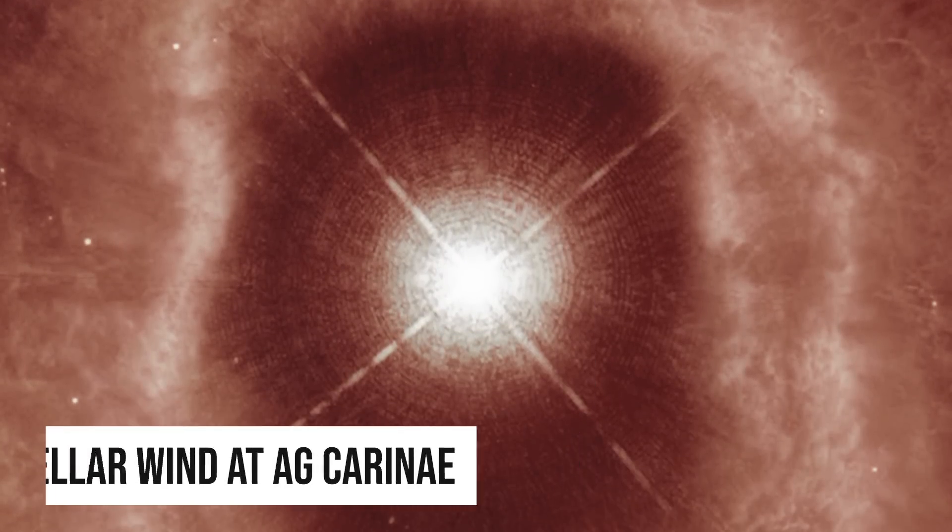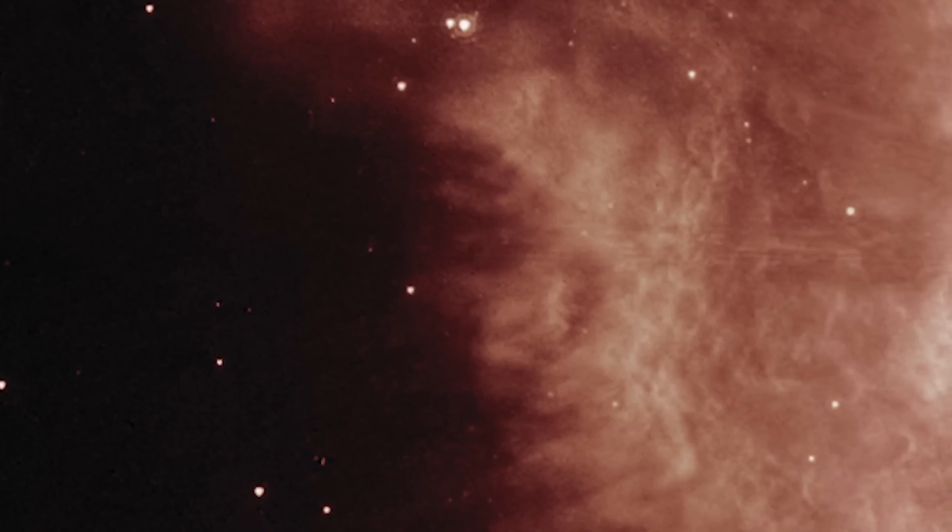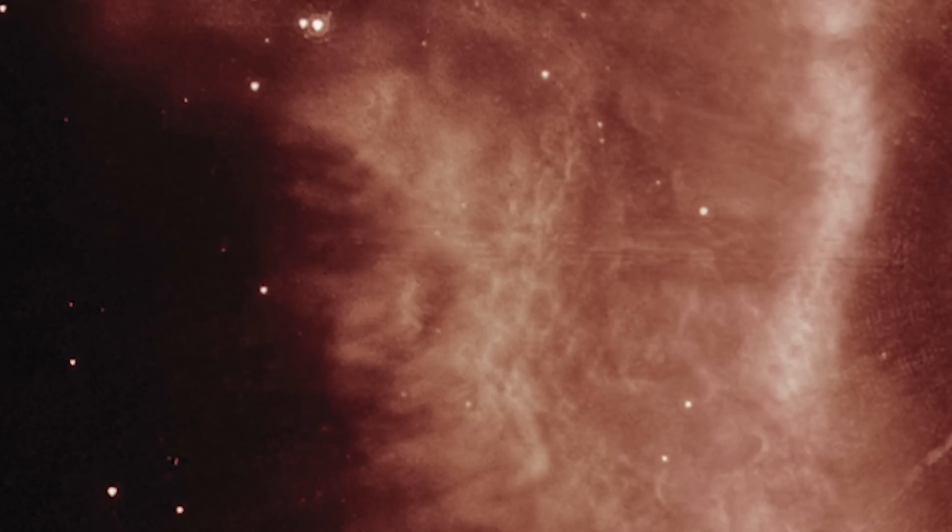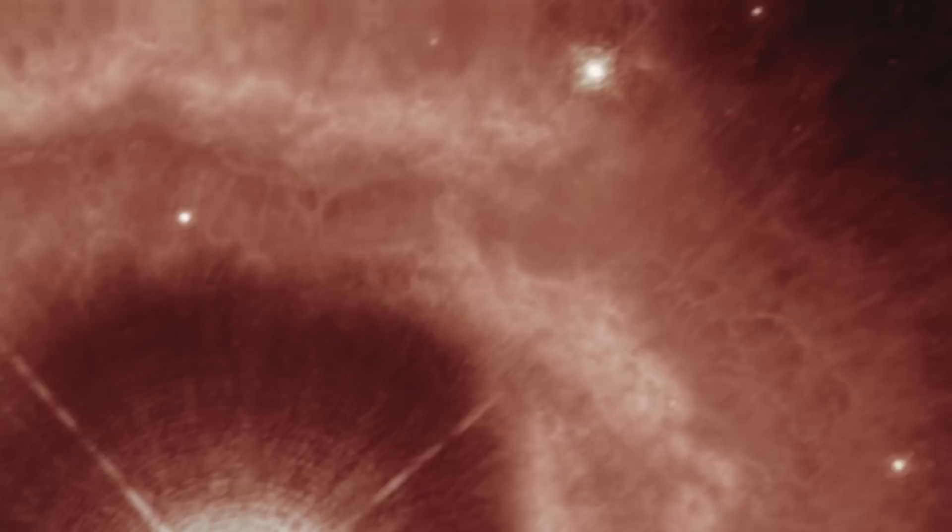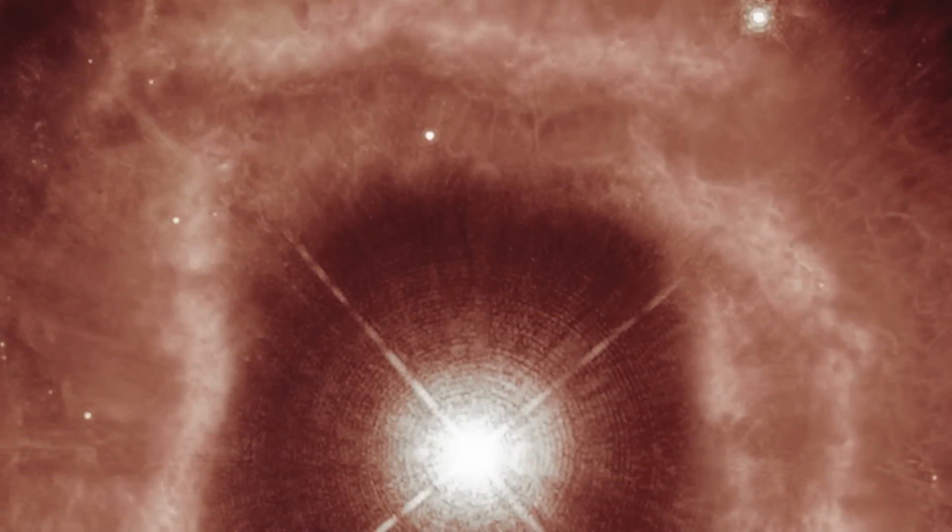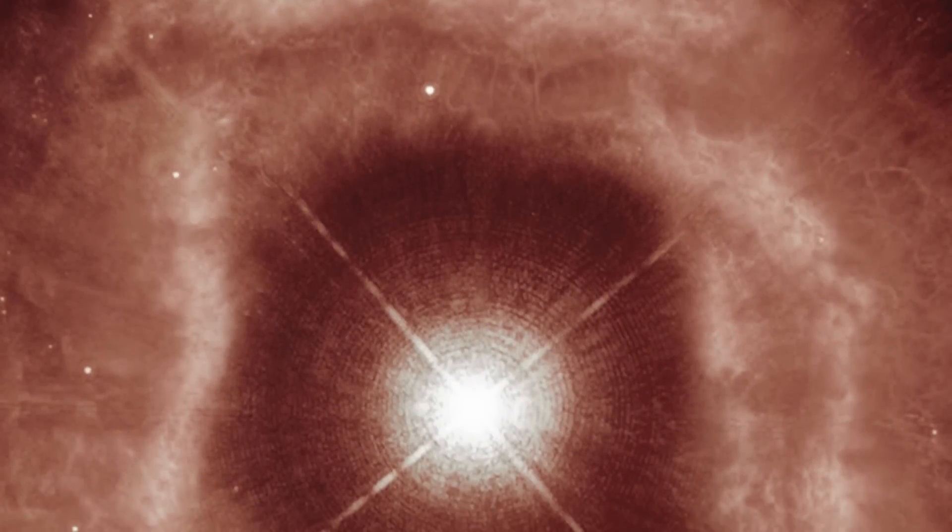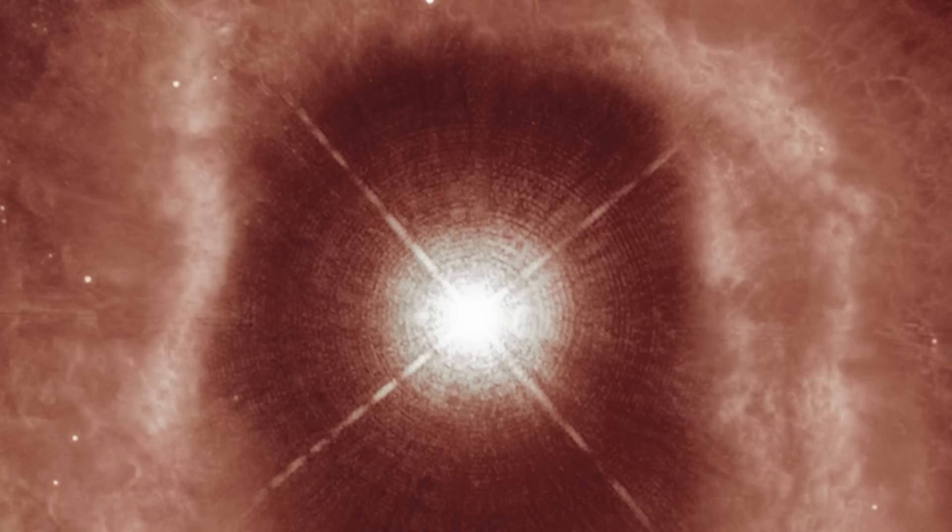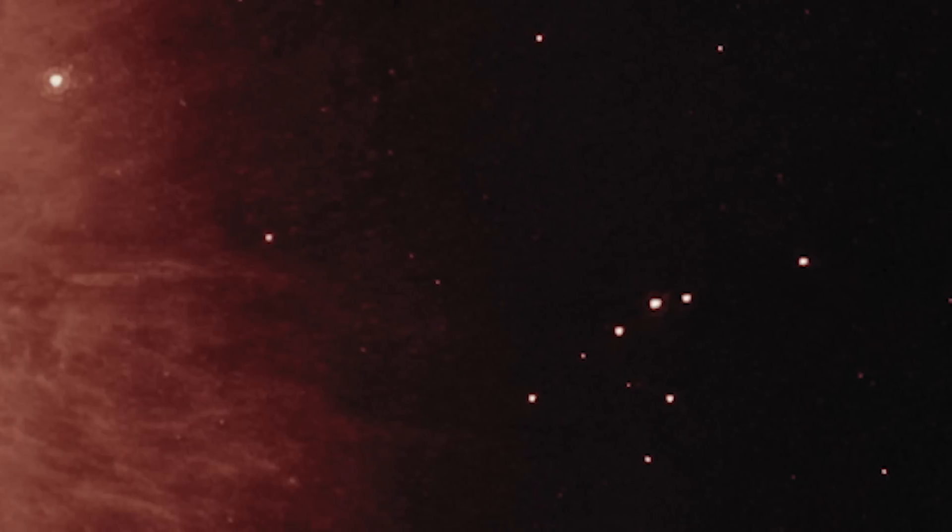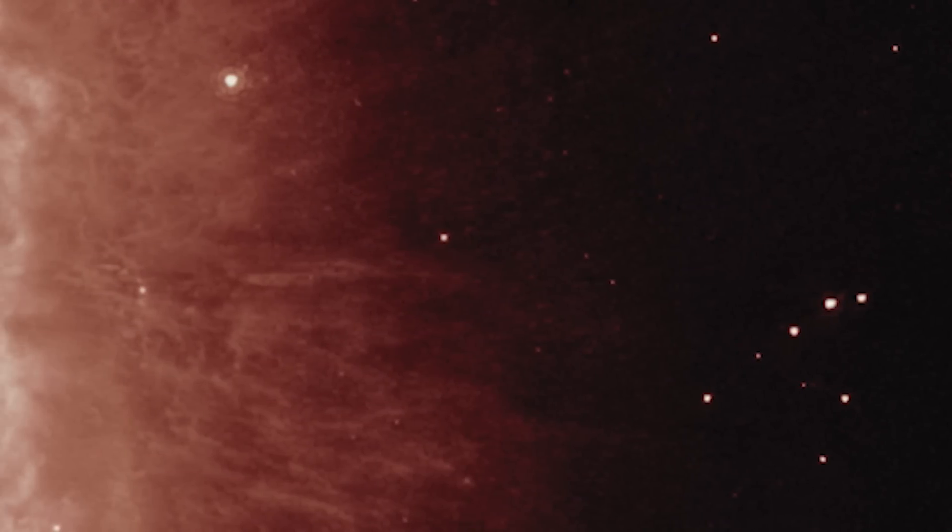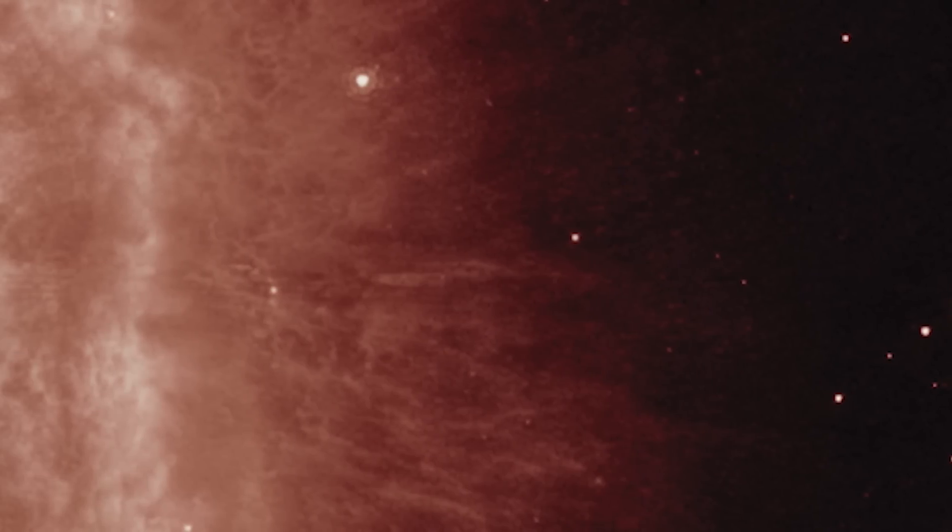7. Stellar Wind at AG Carinae. This image showcases the details of the ionized hydrogen and ionized nitrogen emissions from the nebula seen here in red. This giant star is waging a tug-of-war between gravity and radiation to avoid self-destruction. The star is surrounded by an expanding shell of gas and dust, a nebula, that is shaped by the powerful winds emanating from the star. The nebula is about five light years wide, equal to the distance from here to our nearest star, Alpha Centauri.